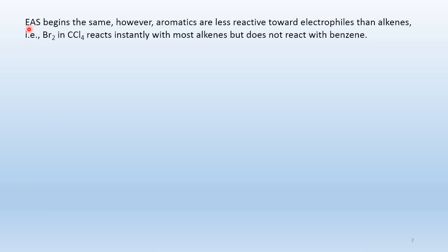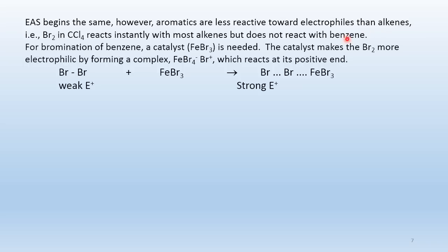Electrophilic aromatic substitution begins the same way. However, aromatics are less reactive toward electrophiles than alkenes — bromine in carbon tetrachloride reacts instantly with most alkenes but does not react with benzene. In bromination of benzene, we need a catalyst, FeBr3. The catalyst reacts with bromine to make a weak electrophile into a strong one, forming an electrophilic complex FeBr4⁻ · Br⁺ — essentially a bromonium cation.